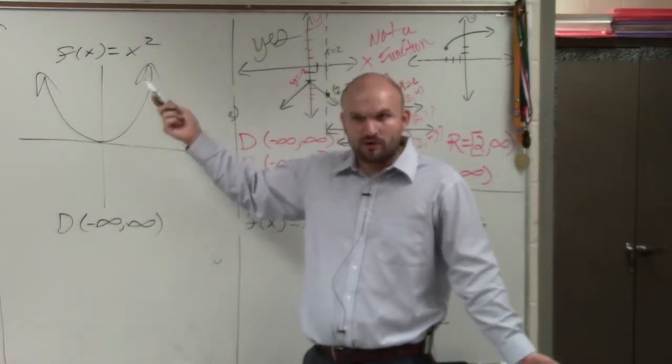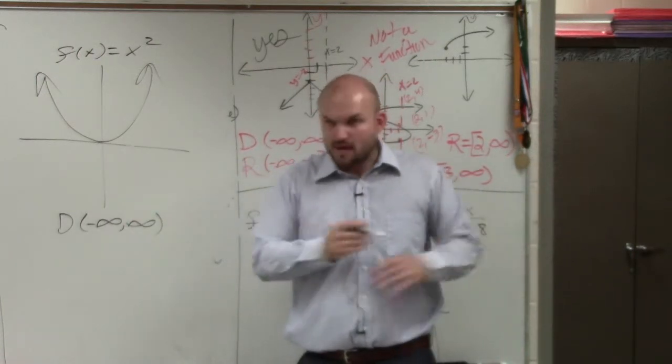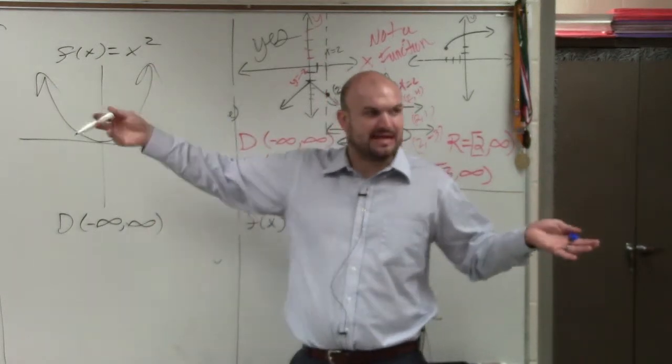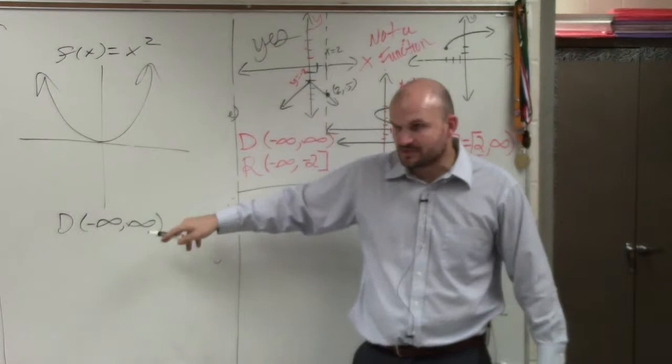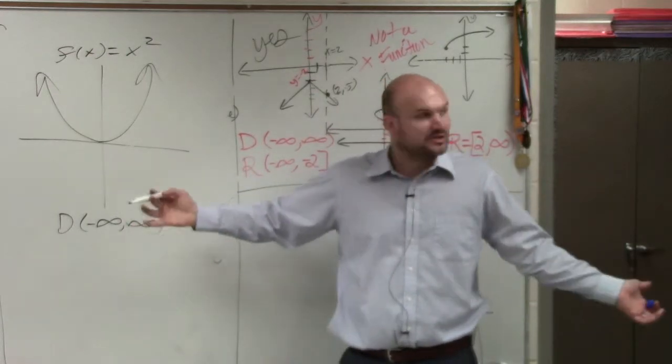No, you can put in a million and square it. You can put in negative 10 and square it. Any number you can think of, you can put in for x and square it to get the output. That's why it's all real numbers. Anything you want to pick between negative infinity and infinity, you can use.